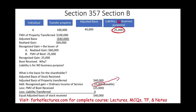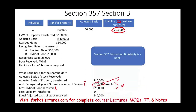What is the basis for the shareholder under Section 357B Rule 1? Adjusted basis: $40,000. Add recognized gain: $25,000 (taxable). Less boot received: $25,000. There is no separate liability transferred here because the liability is considered boot. Therefore the basis is $40,000. The boot received reduces the basis, but since we pay taxes on it, it increases the basis — they cancel each other out. This is Section 357 where the liability is treated as a boot.